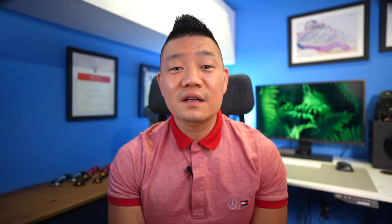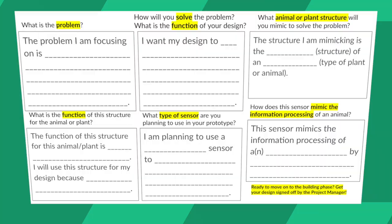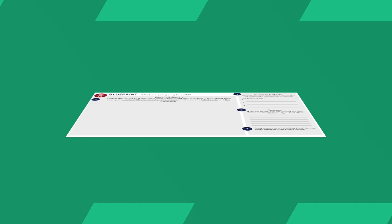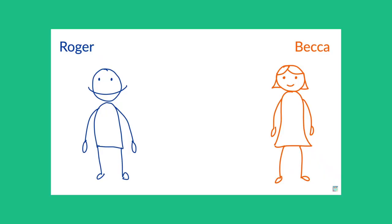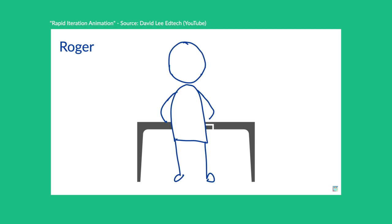Here's a look at the blueprint graphic organizer. Once students got their design signed off, they started the prototyping phase. During this phase, Tracy introduced the concept of rapid iteration. She showed a rapid iteration animation video and then gave them an example of how rapid iteration can help produce better outcomes in the same amount of time.